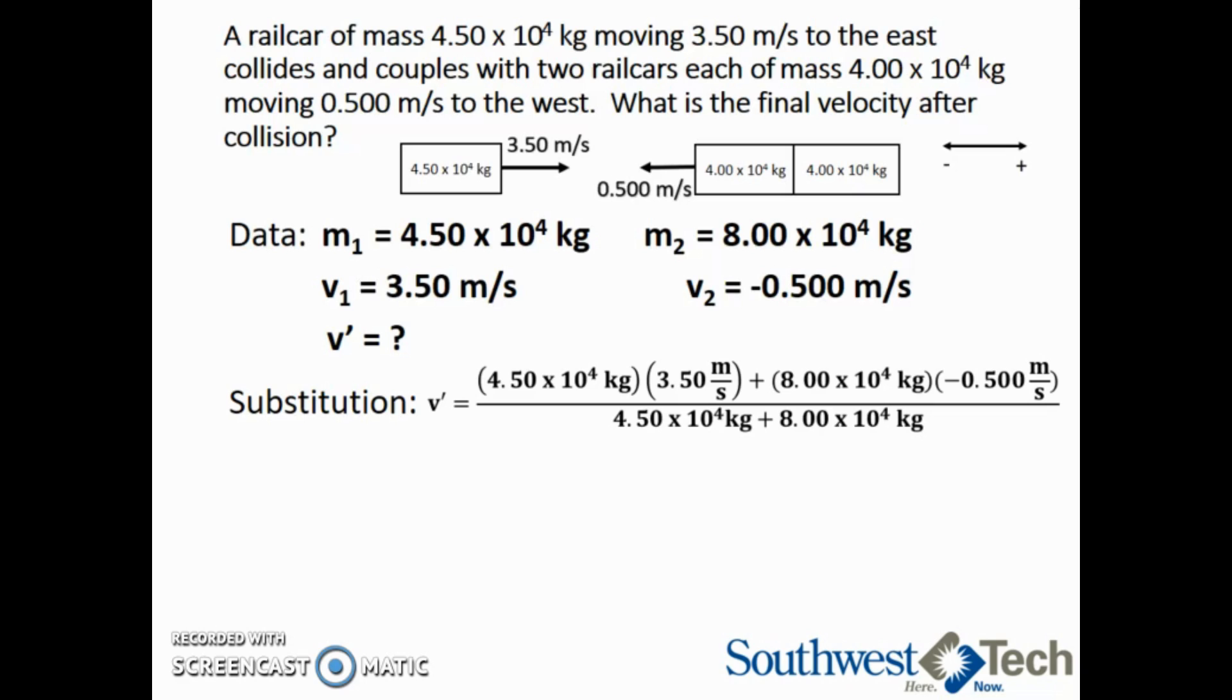Going through the first step using the order of operations, we have 1.58 times 10 to the 5 kilogram meters per second minus 4 times 10 to the 4 kilogram meters per second divided by 1.25 times 10 to the 5 kilograms.